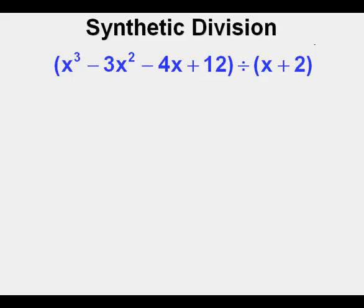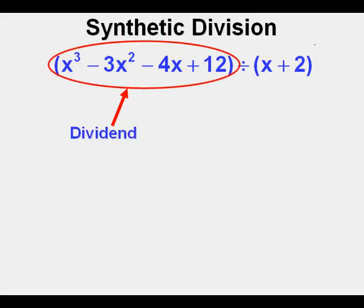Here's the problem as first written. This part, quantity x cubed minus 3x squared minus 4x plus 12, is called the dividend, the expression being divided.